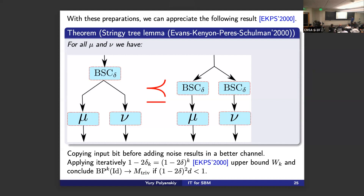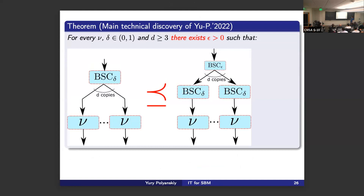This lemma is how Erdős–Peres proved that the KS bound is tight: you progressively push all channels down through this inequality, getting better and better channels, until at the bottom you have the K branches from the top with sequences of BSCs, which you can compute explicitly. What we proved is an improved version: when you push any BSC down the branches, not only do you get a better channel, but you even get a strictly better channel even if you add a little epsilon noise on top.